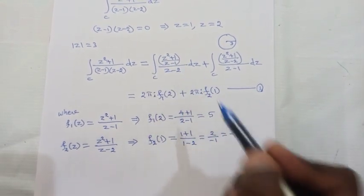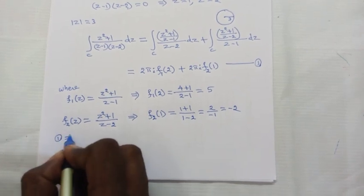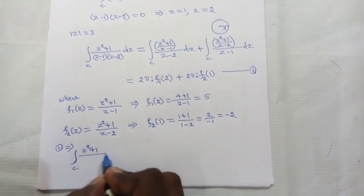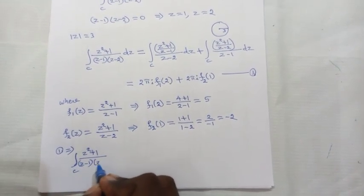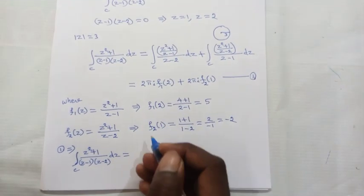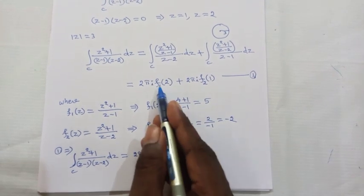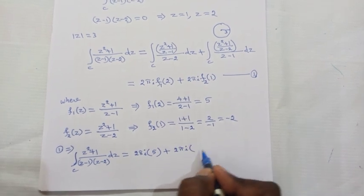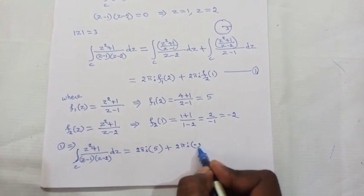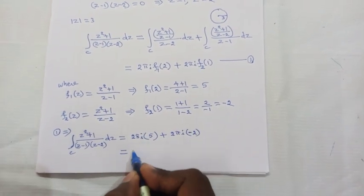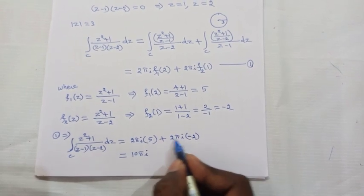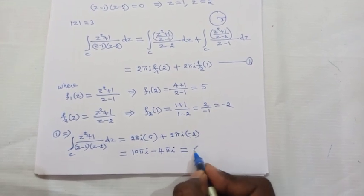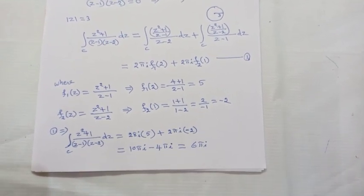Substituting into equation (1): ∫_c (z² + 1) / [(z - 1)(z - 2)] dz = 2πi · f₁(2) + 2πi · f₂(1) = 2πi(5) + 2πi(−2) = 10πi − 4πi = 6πi. So the answer is 6πi.